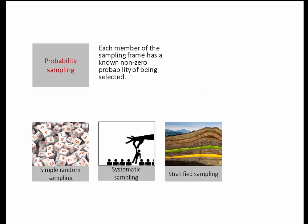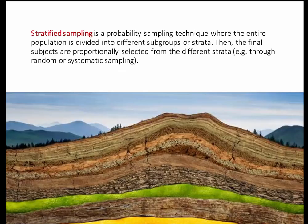Now let me talk about stratified sampling. In stratified sampling, the entire population is divided into different subgroups called strata. A stratum could be social class, education level, or regional differences — people from certain regions. After you've done that, you select people out of those different subgroups through random or systematic sampling.